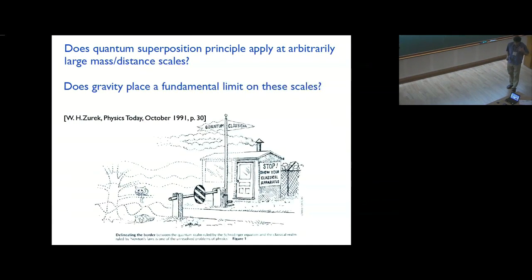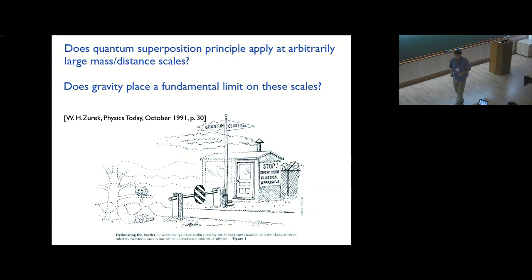What is the question that I'm interested in, I've been thinking about for a while? Well, it's something that's also been discussed in several other talks here, and that is, does the quantum superposition principle apply to arbitrarily large energy and mass scales? And more so, does gravity play a possible role in limiting the quantum classical divide?